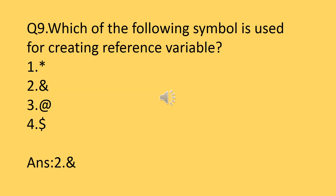Question number nine: which symbol is used for creating a reference variable? A reference variable provides an alternative name for an existing variable. In C++, the ampersand (&) symbol is used to define a reference variable — and here it is not acting as an address operator. The answer is ampersand (&).